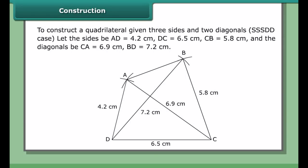To construct a quadrilateral given three sides and two diagonals — the SSSDD case — let the sides be AD = 4.2 cm, DC = 6.5 cm, CB = 5.8 cm, and the diagonals AC = 6.9 cm and BD = 7.2 cm. The two triangles we can construct to complete the quadrilateral are BCD and ACD.